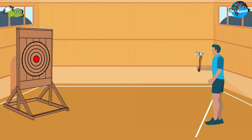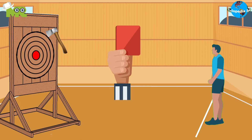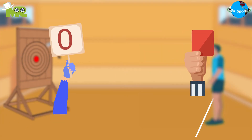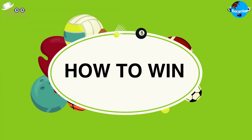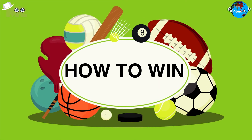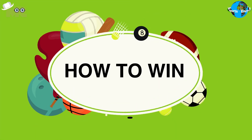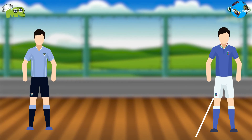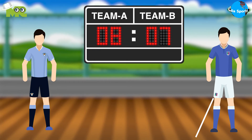In case the thrower misses the target altogether, the throw is disqualified and zero points are awarded. At the end of the game, the thrower with the maximum number of points is declared as the winner.